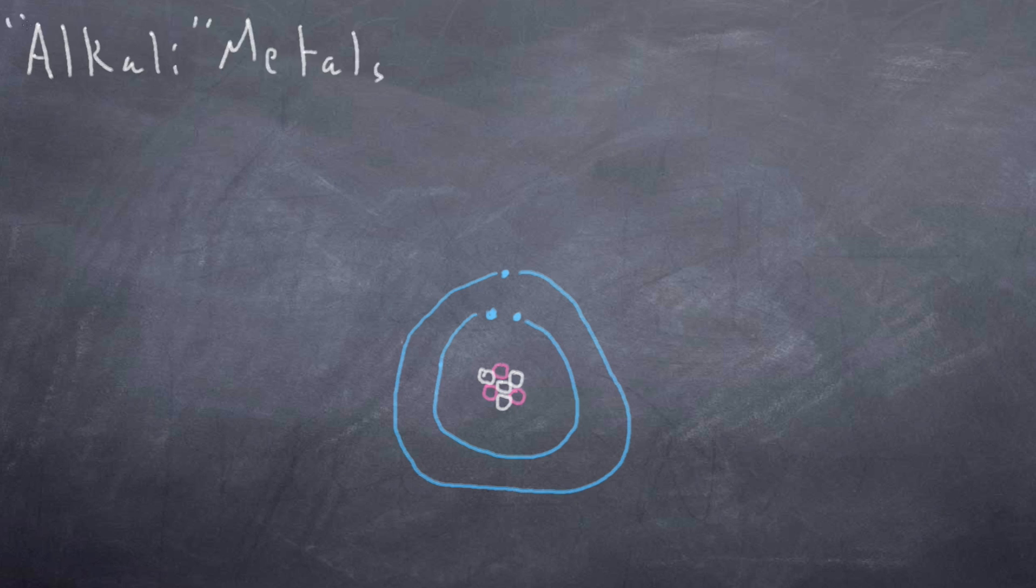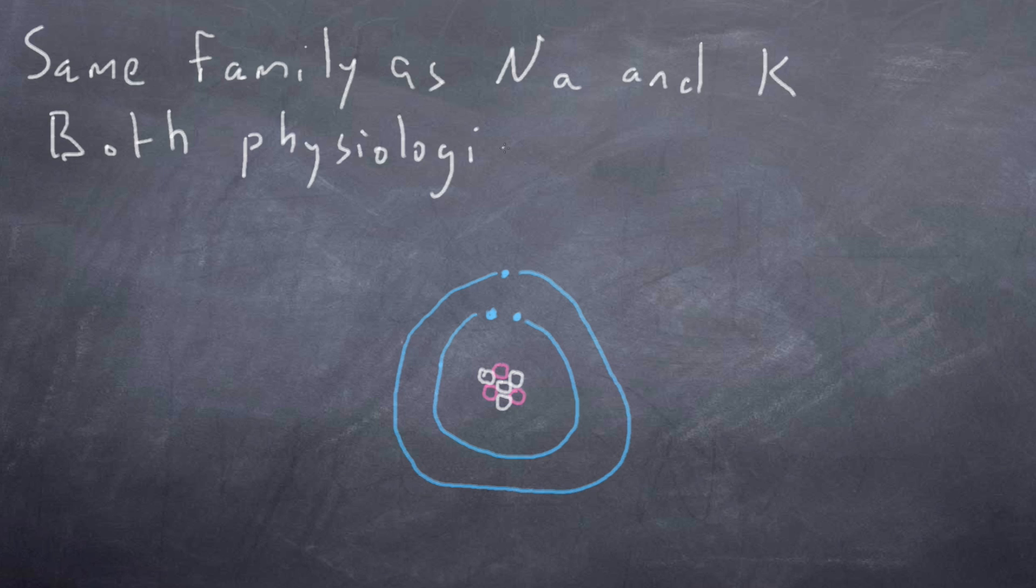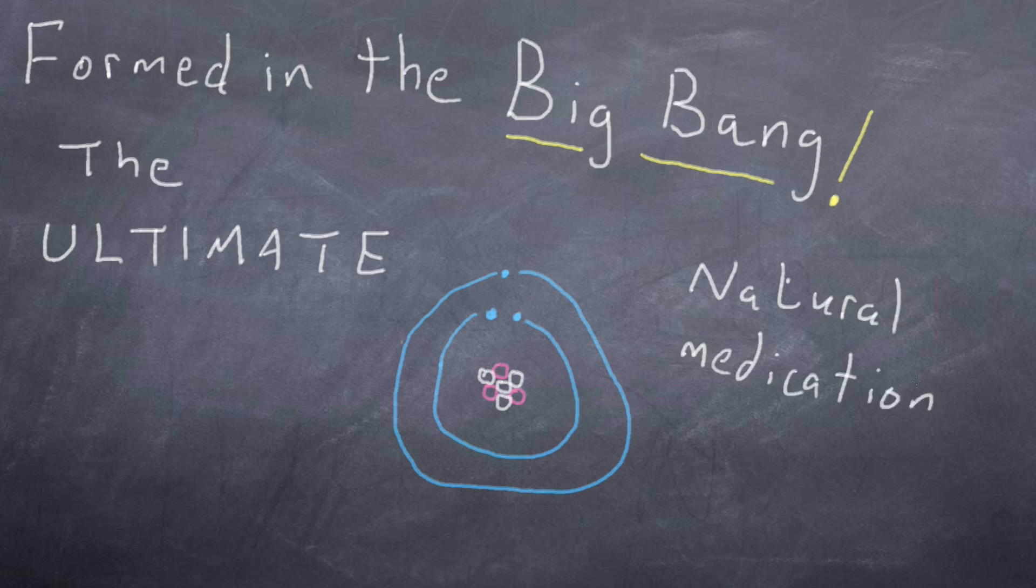It's an alkali metal, meaning it's only got one valence electron, which is easily donated to form the lithium ion. This is the same family that sodium and potassium are from, which are physiologically critical. It was formed in the Big Bang, and so you could say it is the ultimate natural medication.